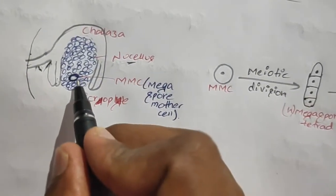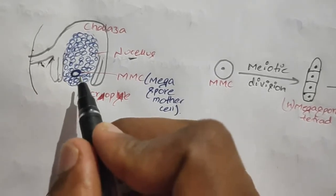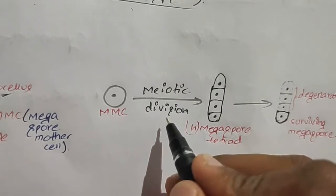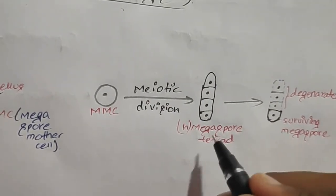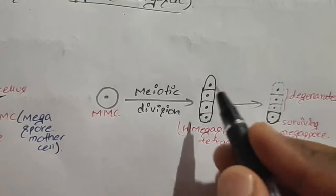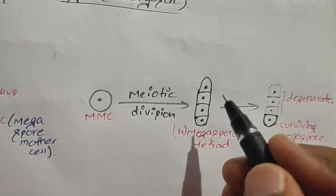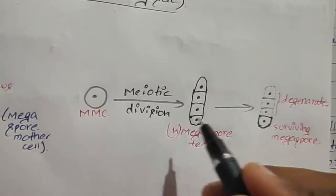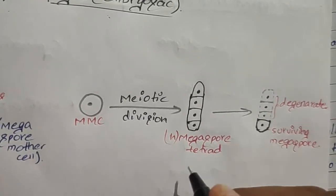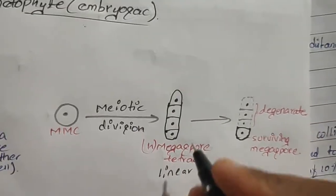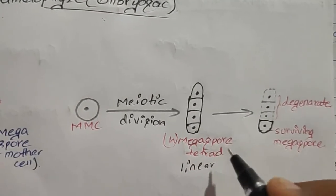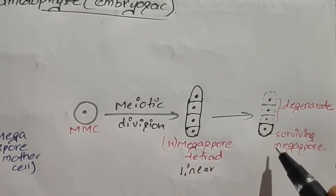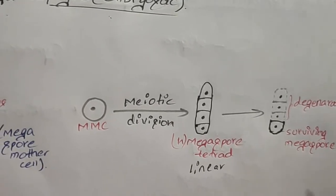One of the cells of the nucellus which becomes bigger is known as the megaspore mother cell. This megaspore mother cell undergoes meiotic division and forms four haploid cells known as the megaspore tetrad. These four haploid cells are combined together, which is why they are known as megaspore tetrad, and this megaspore tetrad is always linear. Out of the four megaspores, three will degenerate and only one megaspore will survive.